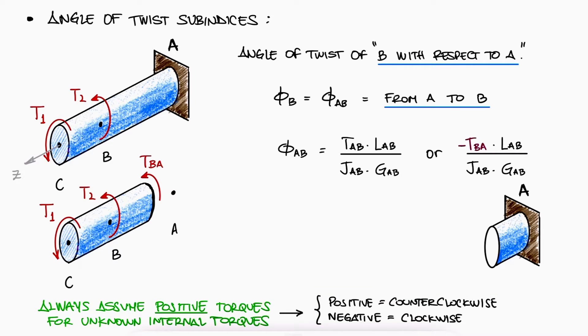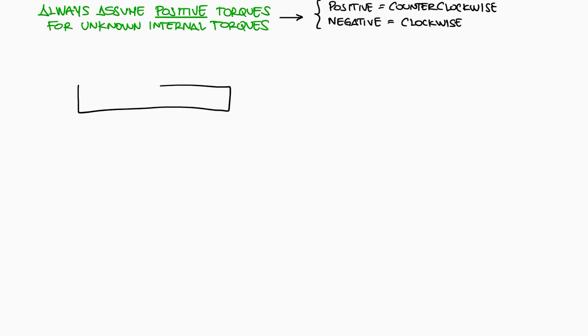This is not only consistent with the right-hand rule and the global convention for the orientation of torques and moments, but also consistent with the general procedure of unknown internal axial loads that we studied in a previous video. The link to the specific section of that video, where we discuss axial load sub-indices, will be linked in the description of this one.